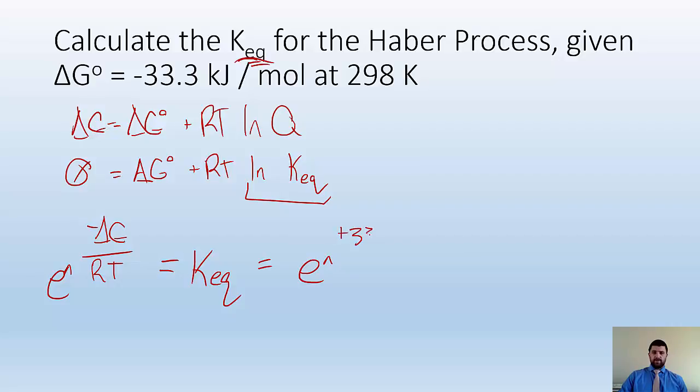And now I'm going to have to plug that in. So it's E to the negative delta G, so positive 33.3 kilojoules per mole, which is given to me in the problem, over RT. Now remember that R, those units have to agree. So I'm going to use 0.008314, so that it is now in terms of kilojoules per mole Kelvin. And then I times it by the temperature in Kelvin, which is 298.